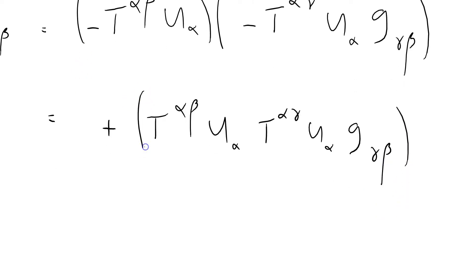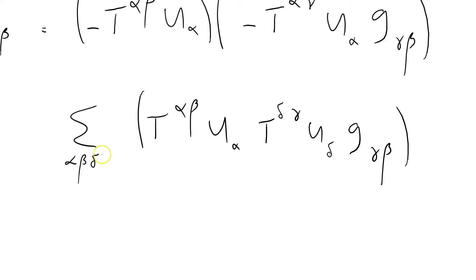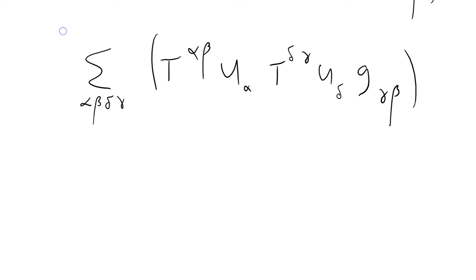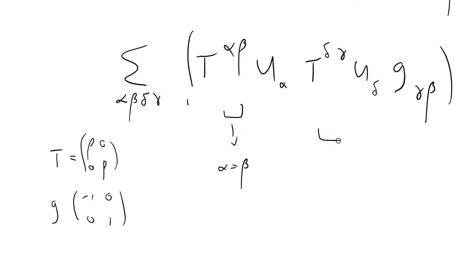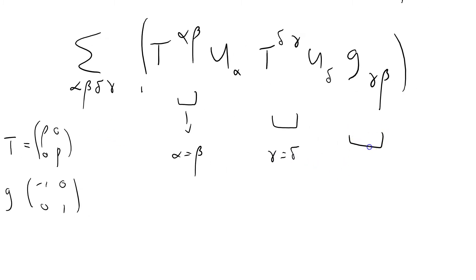All I'm doing is copying that out. Now I'm going to write the sums explicitly — summed over α, β, δ, and γ. Everything's summed; of course it's a scalar. But I've got a whole bunch of restrictions because the stress-energy tensor I'm considering is diagonal, and the fundamental metric tensor is diagonal as well. So this tells me that α equals β, this one says γ equals δ, and this one says β equals γ. Therefore α equals β equals γ equals δ.